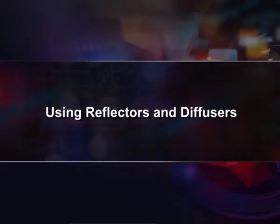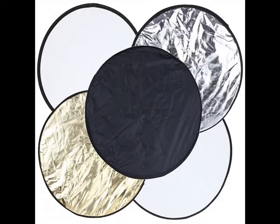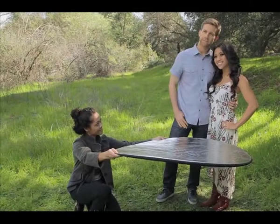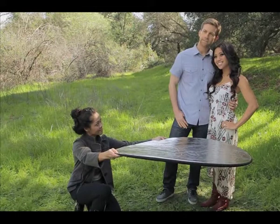Using reflectors and diffusers — in videography, a reflector is an improvised or specialized reflective surface used to redirect light towards a given subject or scene. The easiest and least expensive way to improve a subject's lighting when shooting in sunlight is to use a reflector.